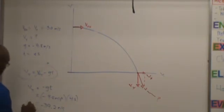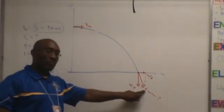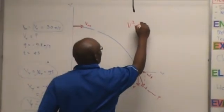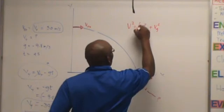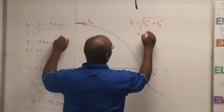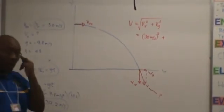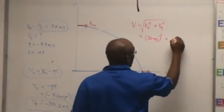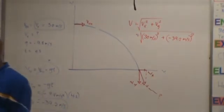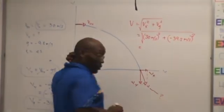Now you have Vy, and you have Vx. So what do you do with that? You find the hypotenuse — take that squared plus that squared, take the square root, and that gives you the answer. You've got to be able to recognize this as a problem. That is quick thinking, and it comes with practice.